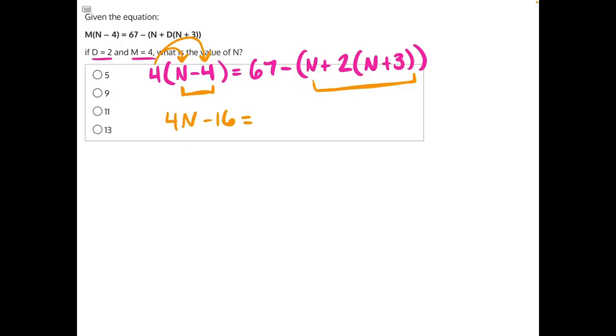That's equal to 67 minus n plus, we'll do distributive property again. 2 times n will give us 2n, and 2 times 3 will give us 6.